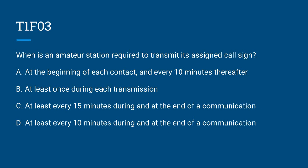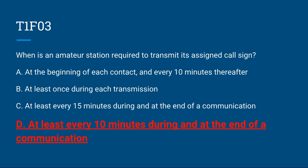T1F03: When is an amateur station required to transmit its assigned call sign? A. At the beginning of each contact and every 10 minutes thereafter. B. At least once during each transmission. C. At least every 15 minutes during and at the end of a communication. Or D. At least every 10 minutes during and at the end of a communication. Correct answer is D: at least every 10 minutes during and at the end of a communication.